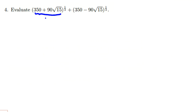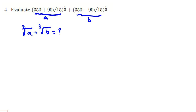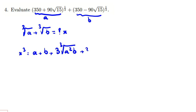For this problem, we consider term a and term b. We want to find what cube root of a plus cube root of b equals. Let's call this x, so x cubed equals a plus b plus three times the cube root of a squared b plus three times the cube root of a times b squared.